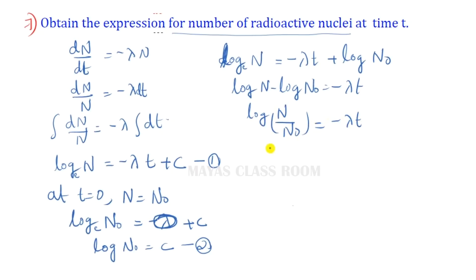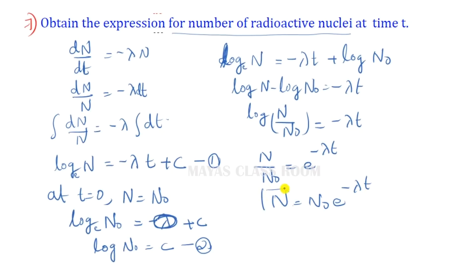Taking the exponential: N/N₀ = e^(−λt), so N = N₀e^(−λt). This is the expression for the number of radioactive nuclei at time t.